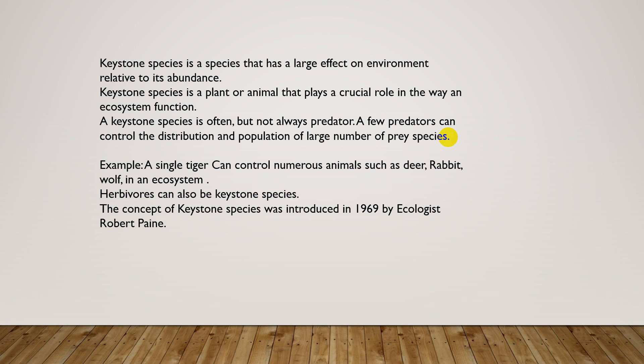For example, a single tiger can control numerous animals such as deer, rabbit, and wolf in an ecosystem. If the number of deer and rabbits increases, there will be overconsumption of plant species, and those plants may become extinct or their survival will be in danger.